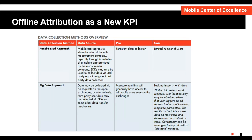There are two main approaches in the market for foot traffic attribution. One is a panel-based approach where a company knows everywhere a user goes. The other takes advertising data more broadly — you may miss someone who goes into a store without using their app, but you get a broader ecosystem of data because you're not tied to a panel. There are different methodologies by which companies create these foot traffic attribution reports, so exposure to the different types is important.